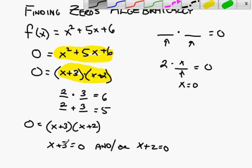Solve these two equations. What would x have to be here? x has to be equal to negative three. And here, x would have to be equal to negative two.